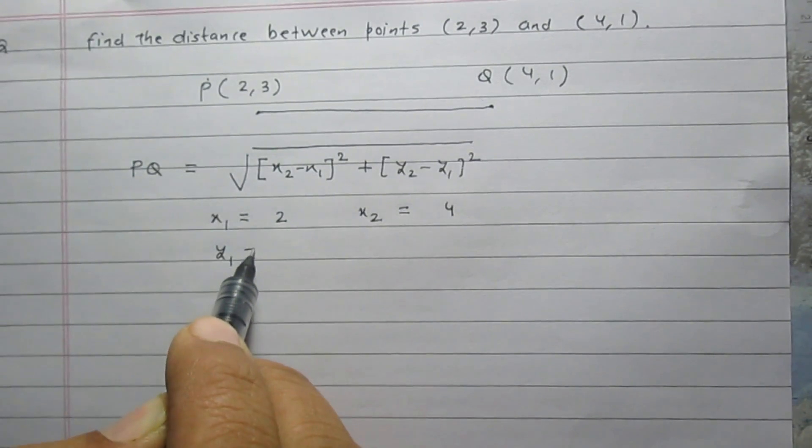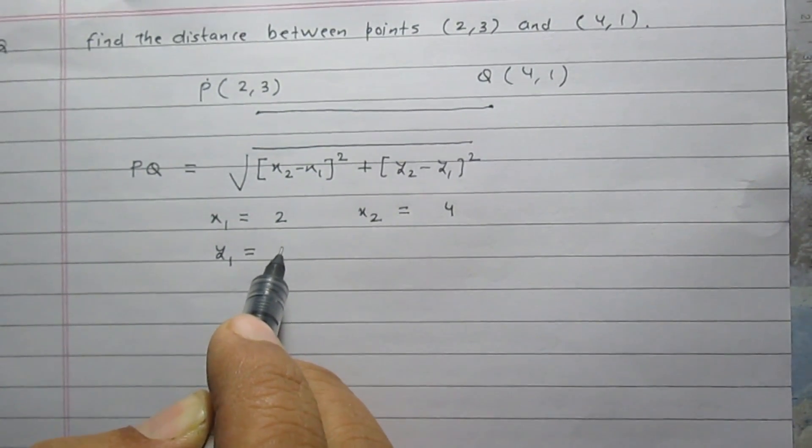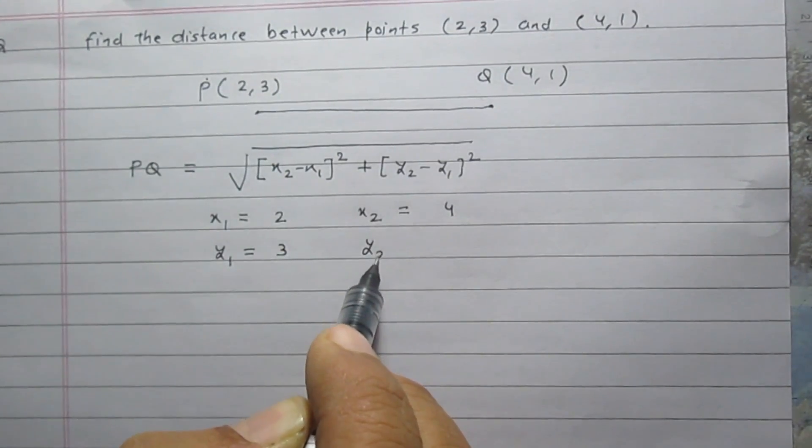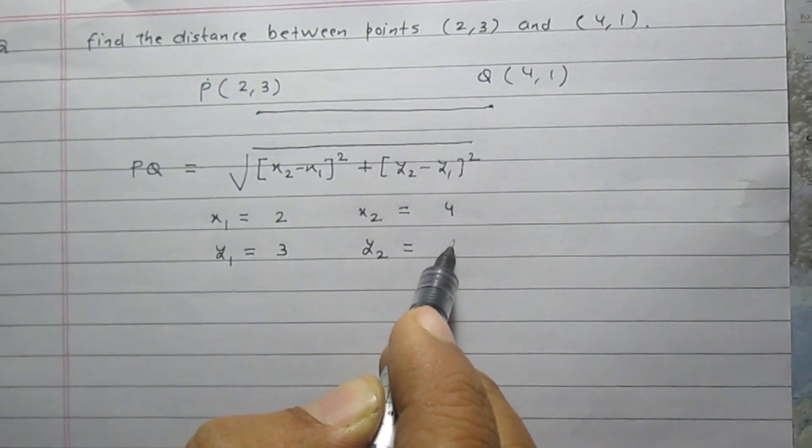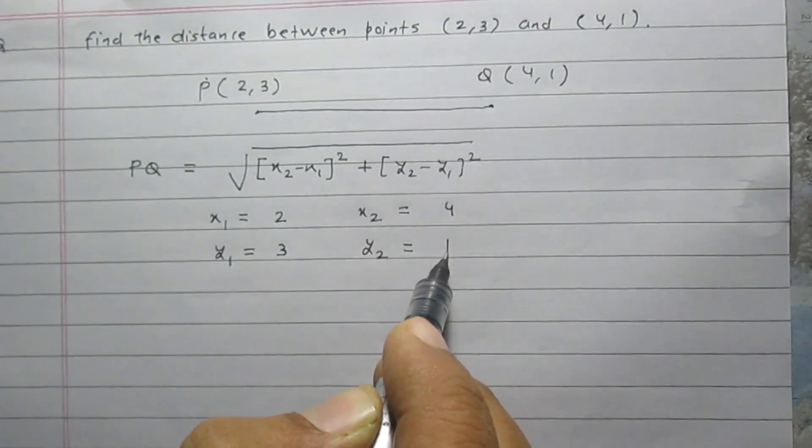y1 stands for the y-coordinate of first point P, which is 3. And y2 is the y-coordinate of second point Q, which is 1.